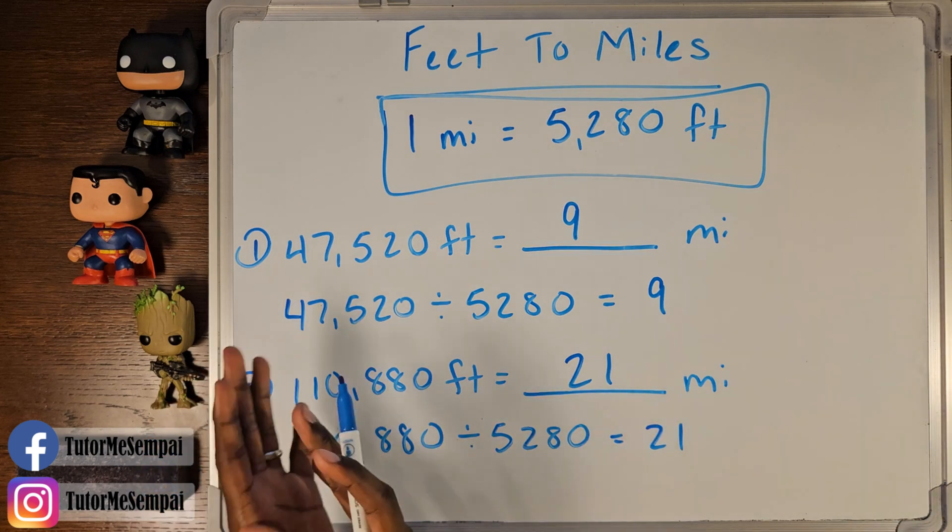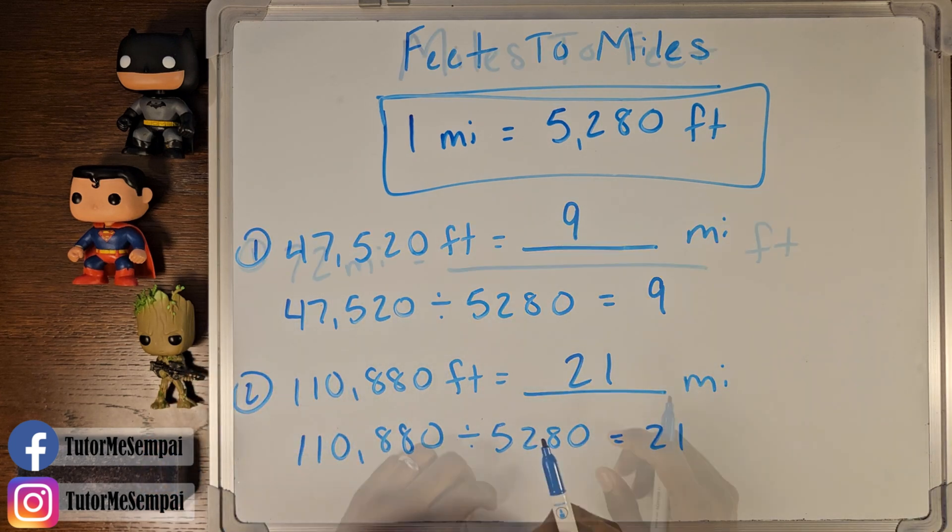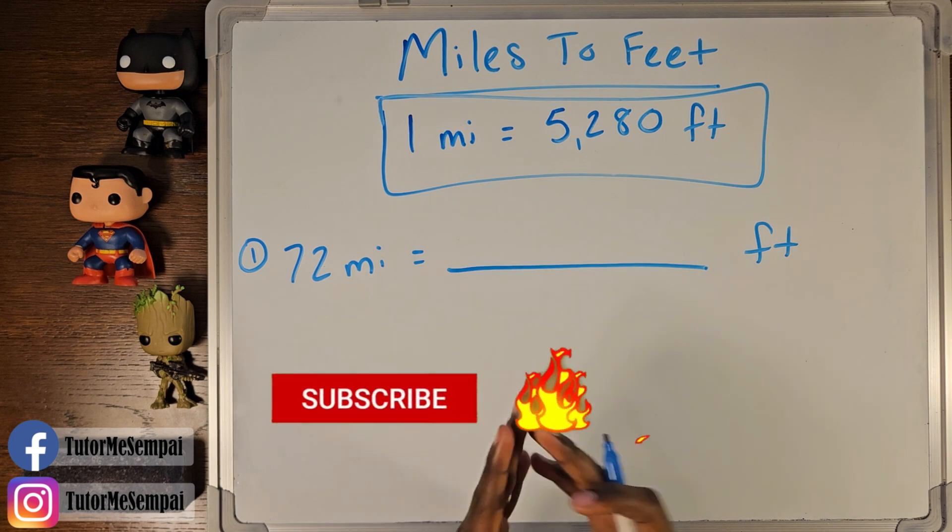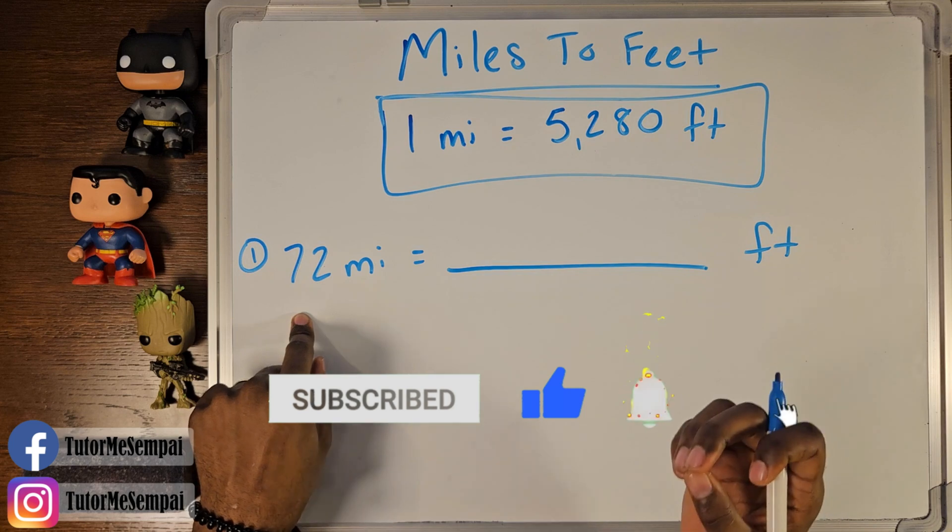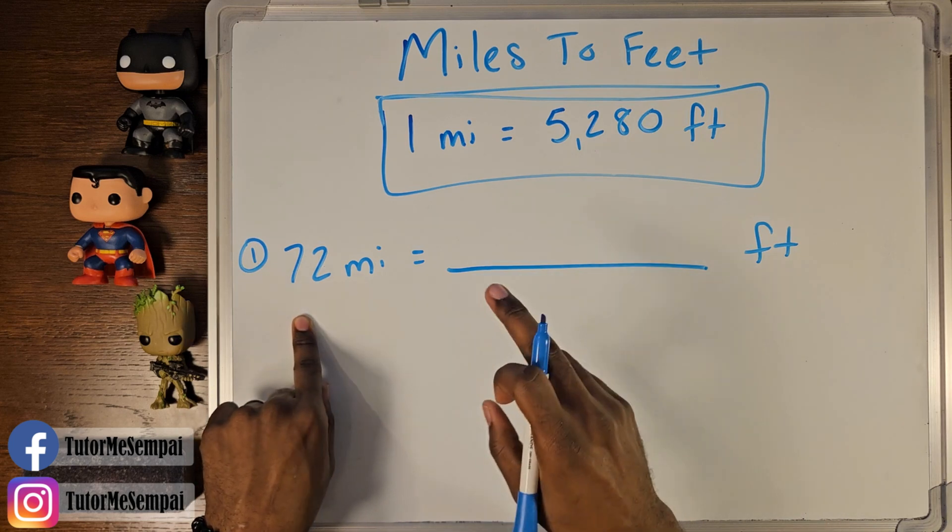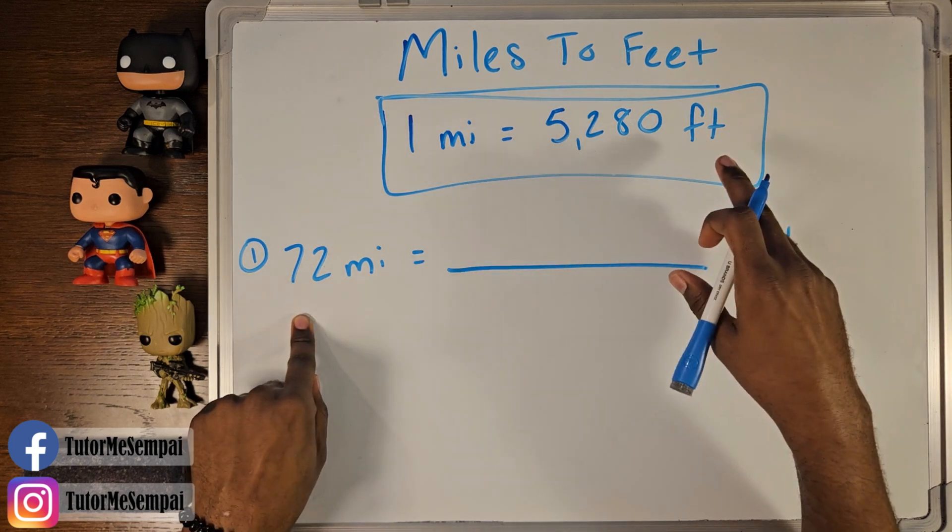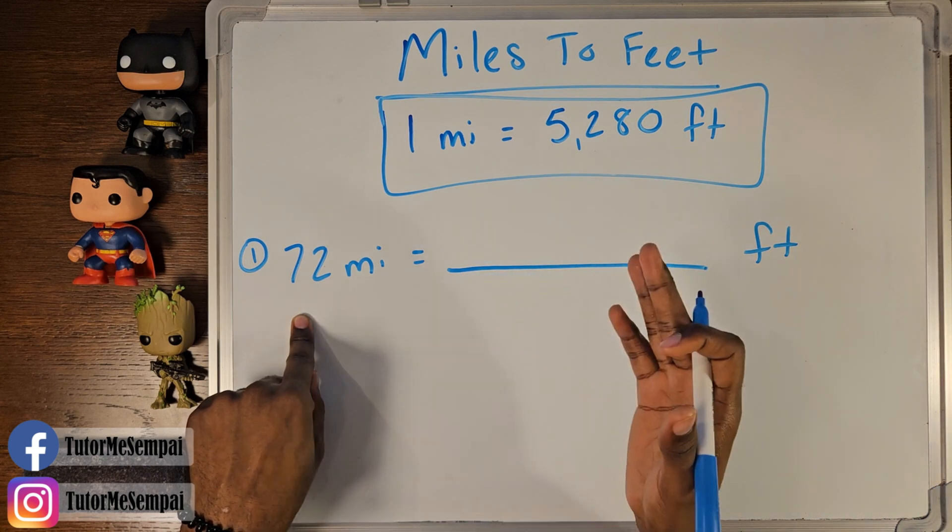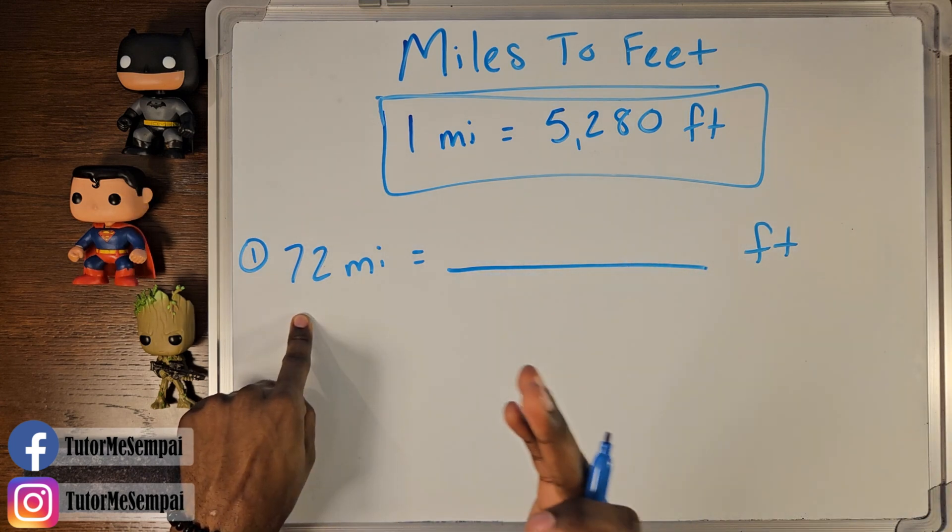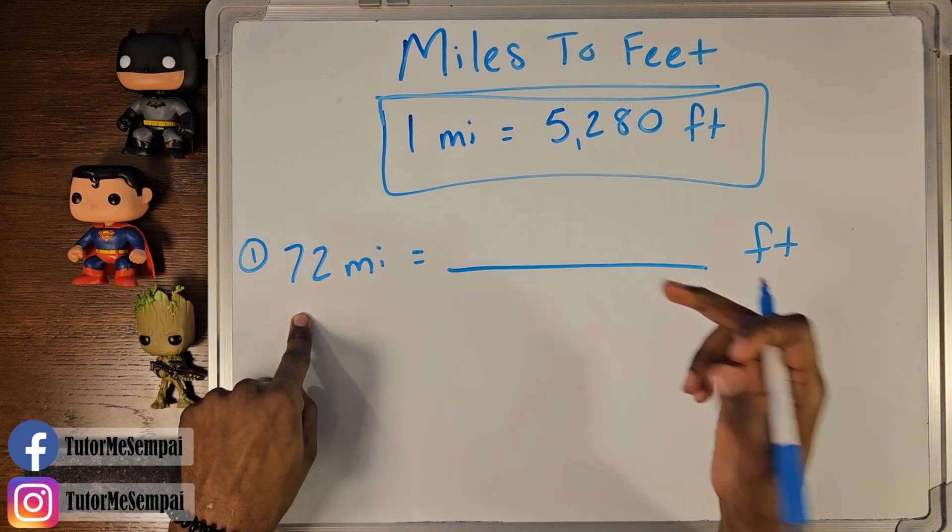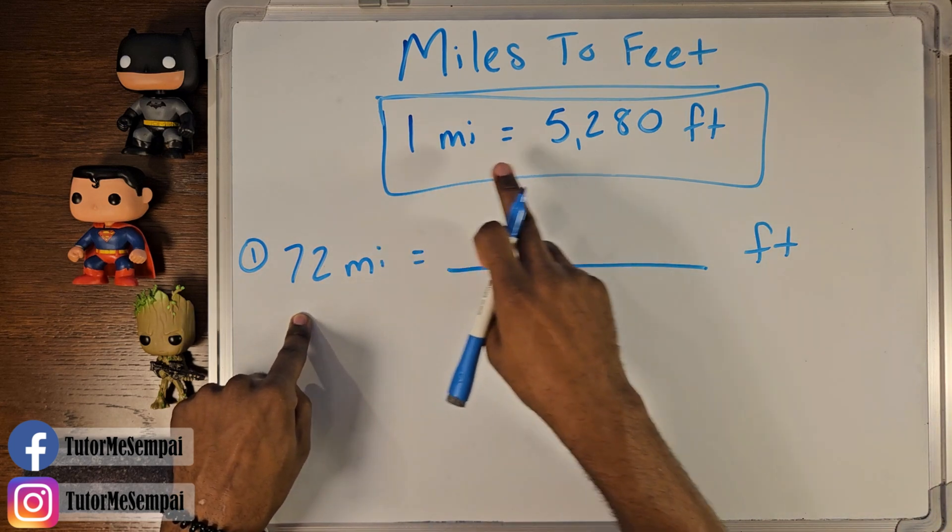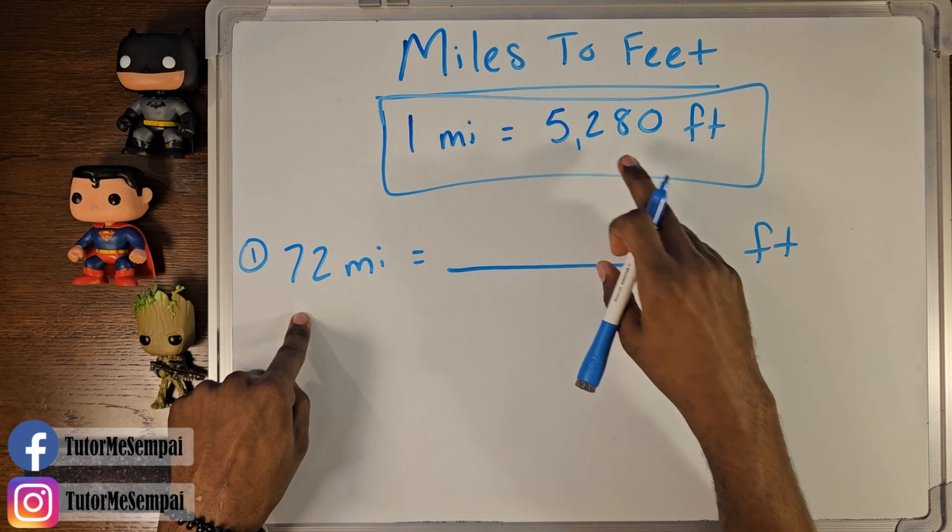So now that we've converted from feet to miles, let's go back from miles to feet. So if we're going from miles to feet and we were given 72 miles, how many feet would we have? Well, remember, this is our basic unit conversion that's going to help us go from feet to miles and also from miles to feet. So if we have 72 miles, but we know that every mile we have is going to be 5,280 feet, how many feet are we going to have?